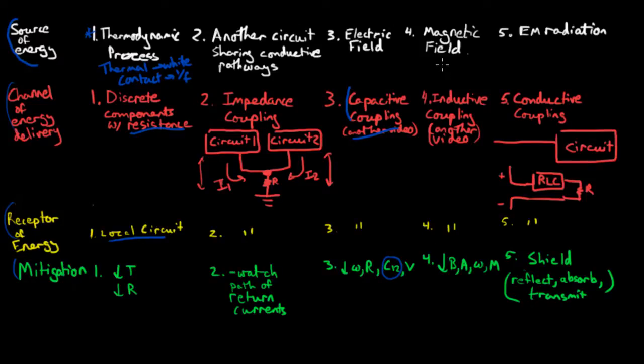The fourth thing is the magnetic field, kind of a local magnetic field. And the coupling channel is inductive coupling, and I'm going to also cover that in another video. What you do for the case of mitigating magnetic field coupling is you would lower the magnetic field, decrease area, decrease the frequency of the magnetic field source, or the mutual inductance. And in practice, the only ones you're going to have much control over are the area and the mutual inductance.